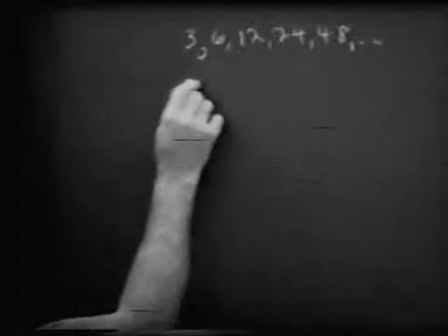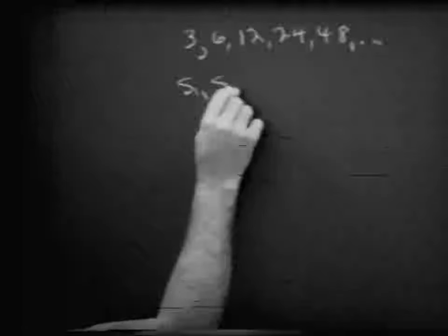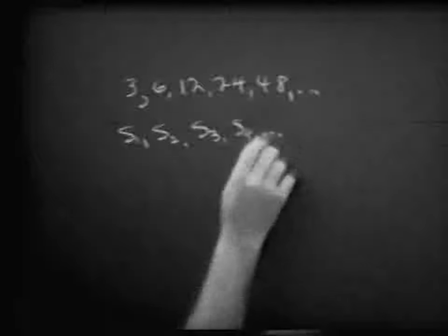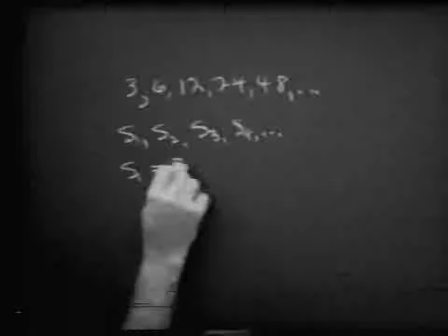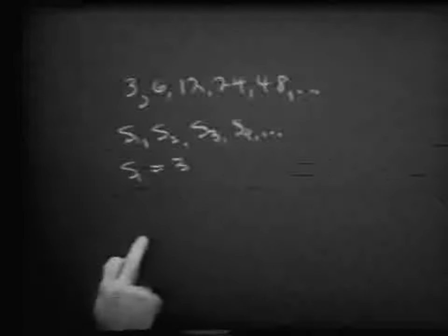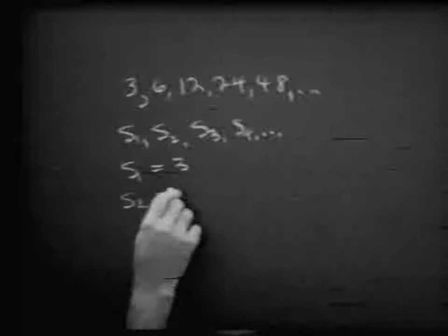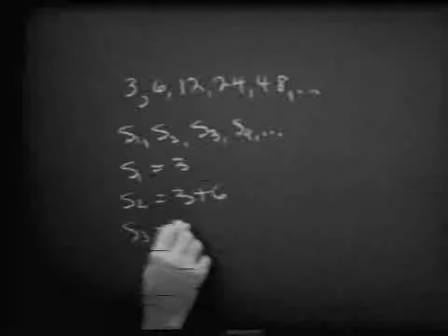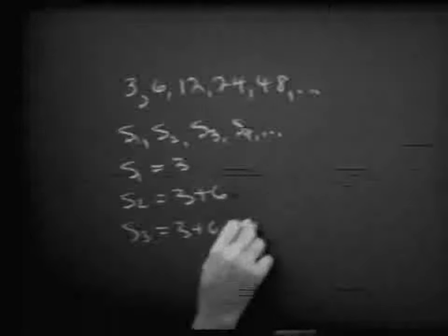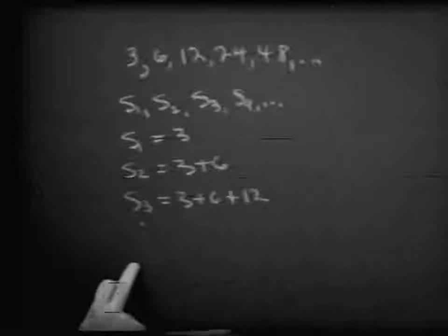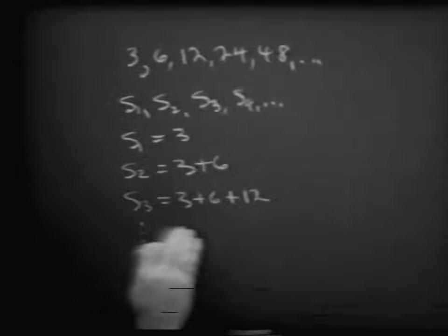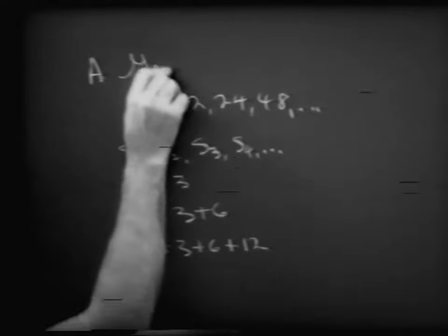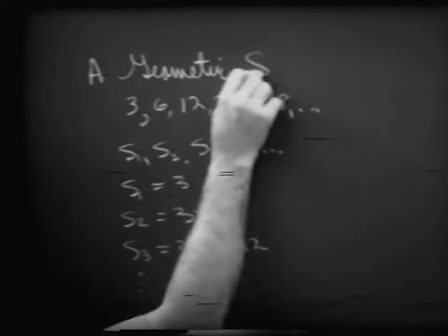Just as we did earlier, what I'd like to do is construct another sequence: S sub 1, S sub 2, S sub 3, S sub 4, and so on. S sub 1 is the sum of the first number, which is simply 3. S sub 2 is the sum of the first two numbers of our sequence. S sub 3 is the sum of the first three numbers of our given geometric sequence. We call this a geometric series.